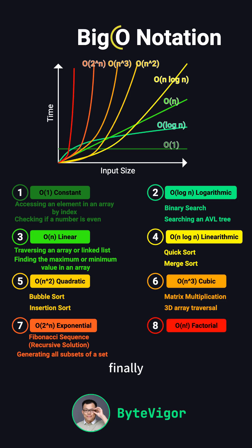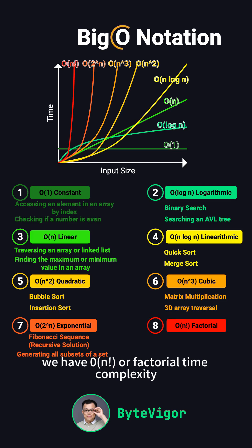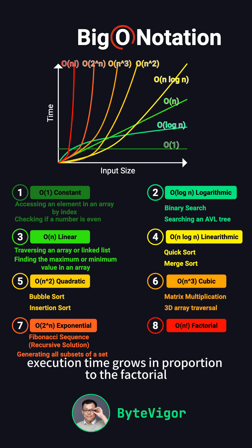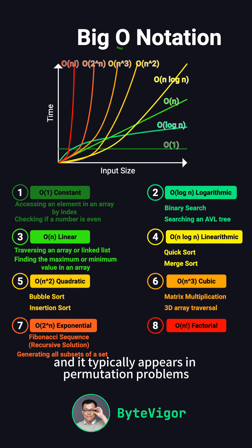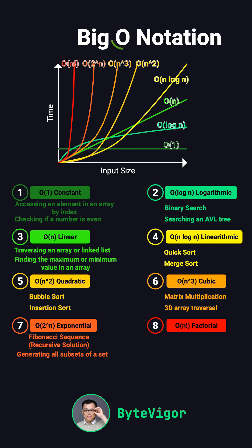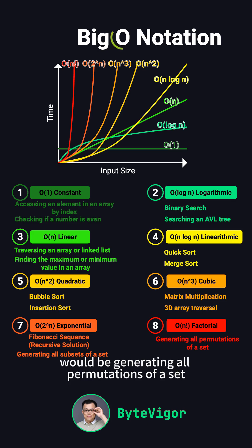Finally, we have O(n!), or factorial time complexity. This means the execution time grows in proportion to the factorial of the input size, and it typically appears in permutation problems. An example would be generating all permutations of a set.